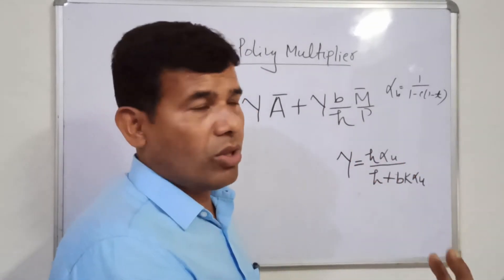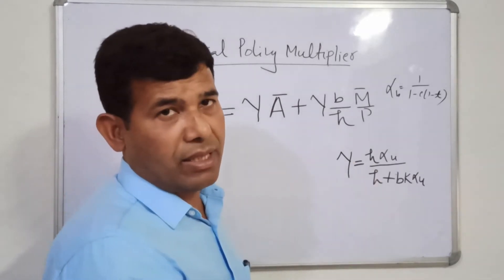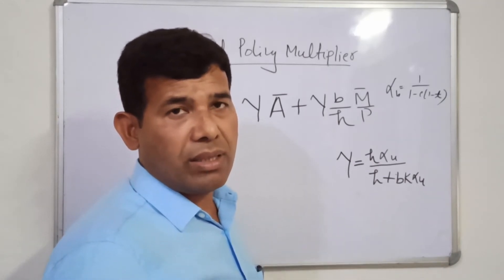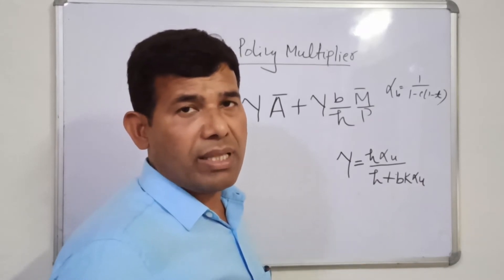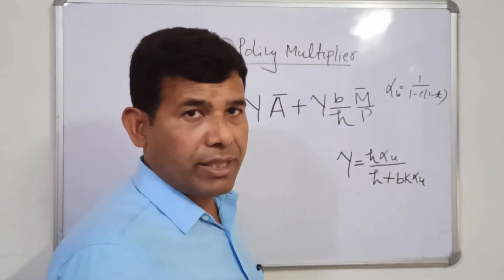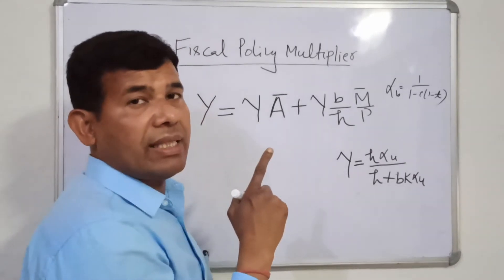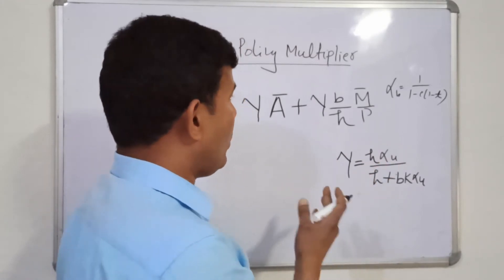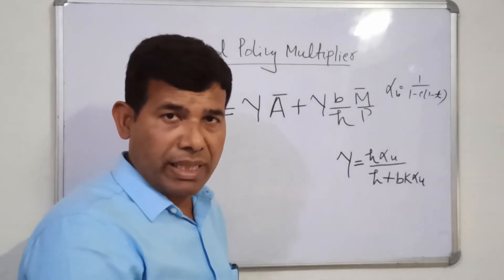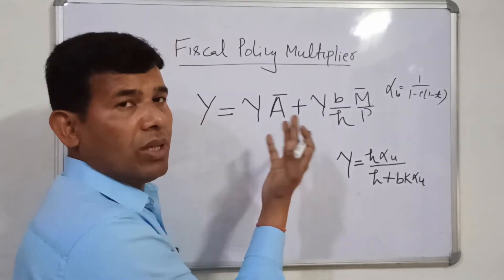In the first term of the equilibrium income equation, it is A-bar which is associated with government expenditure. A-bar equals C-bar + c×TR-bar + I-bar + G-bar + net export bar. It is within A-bar that government expenditure G appears. So if government expenditure changes, income will change. The question is to what extent income will change. We find the change in equilibrium income due to change in government expenditure by differentiating the equilibrium income equation with respect to A-bar.